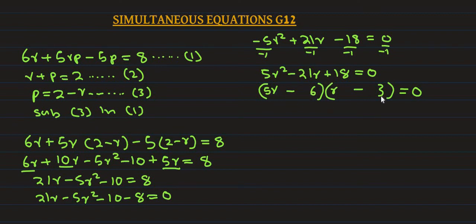We factorize. Negative 3 times negative 5 equals negative 15, and negative 15 plus negative 6 equals negative 21. So we have (5r minus 6)(r minus 3) equals 0.